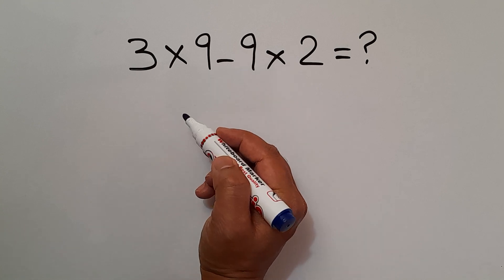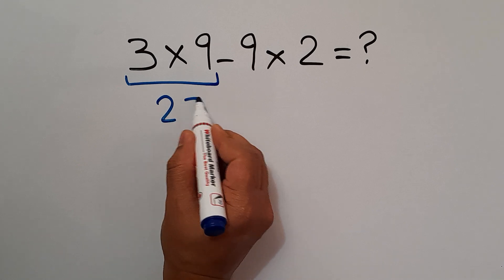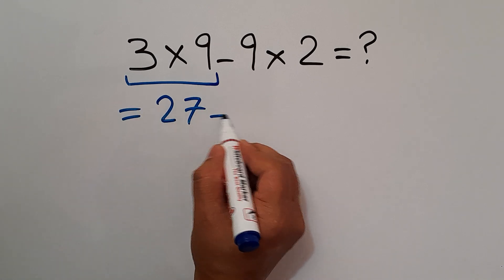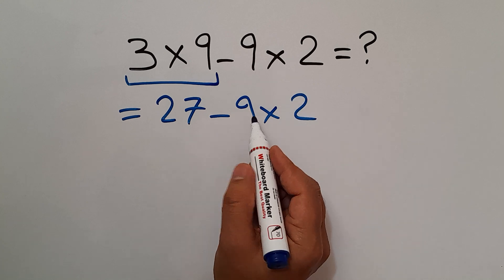3 times 9 gives us 27, so 27 minus 9 times 2. Now we do this multiplication.